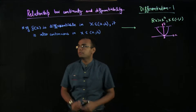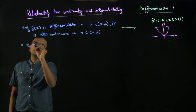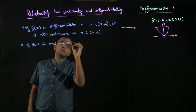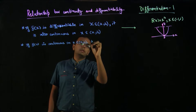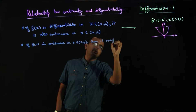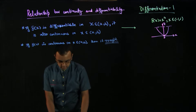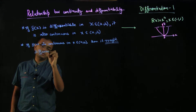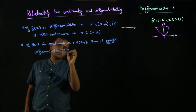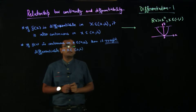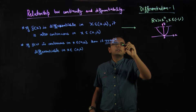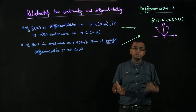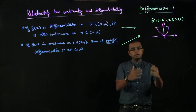Now, for the opposite case: if f(x) is continuous on x from a to b, then it may or may not be differentiable on [a, b]. Taking the same example, f(x) = x² on [-1, 1] is continuous and also differentiable.